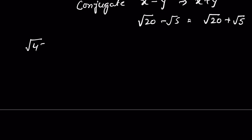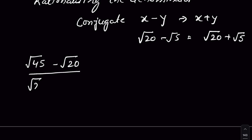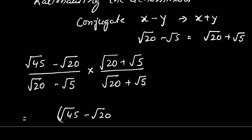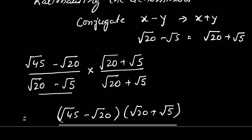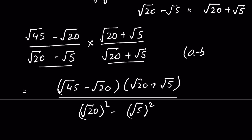So we write: square root of 45 minus square root of 20, upon square root of 20 minus square root of 5, times square root of 20 plus square root of 5 over square root of 20 plus square root of 5. The denominator is in the form of difference of squares, so we can write it as square root of 20 squared minus square root of 5 squared, since (a minus b)(a plus b) equals a squared minus b squared.